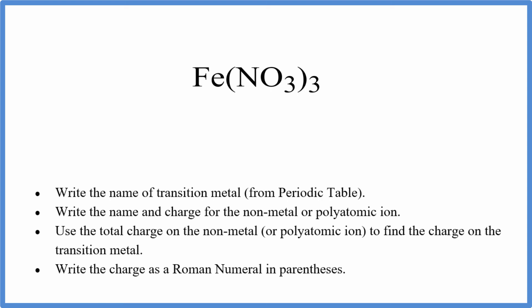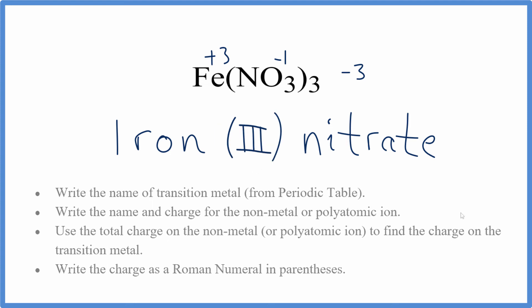So pause and give this one a try. Fe is iron, and then NO3 is the nitrate ion. We can look that up on the list of common polyatomic ions, so we write nitrate. And nitrate has a minus 1 charge. It says that right there on the table. We have three of them, 3 times minus 1. That gives us a charge of minus 3. That means the iron will have a charge of plus 3. We write our parentheses, we write the Roman numeral 3, and the name for this compound is iron 3 nitrate.